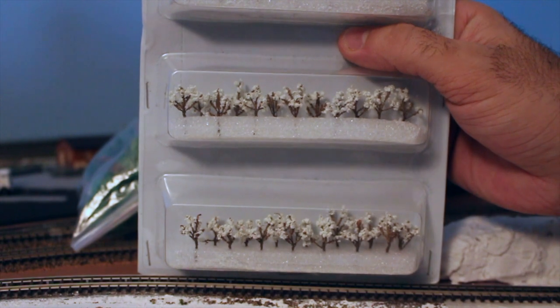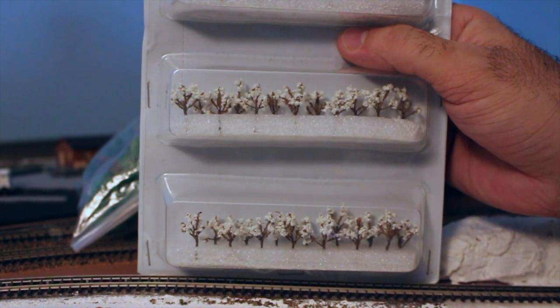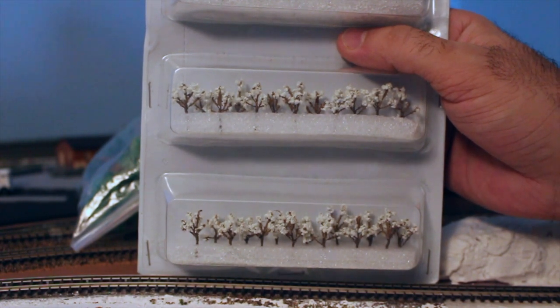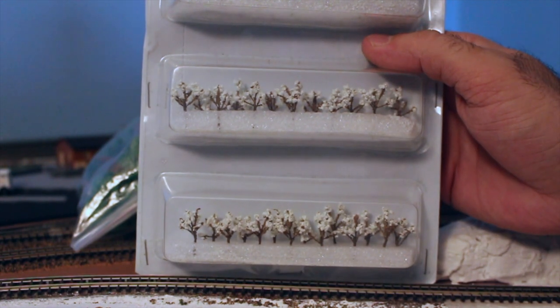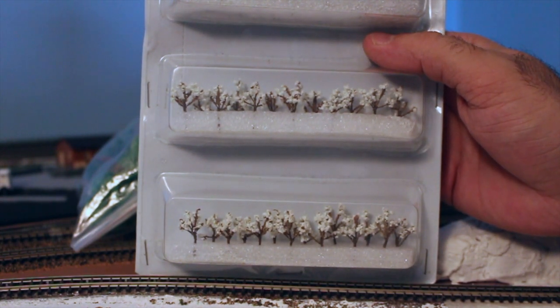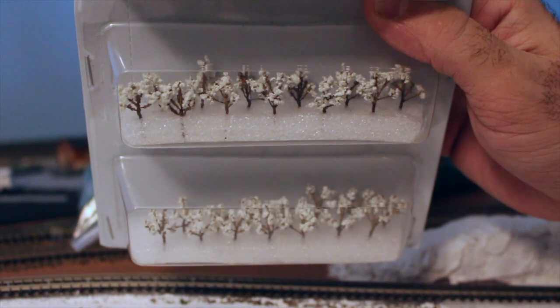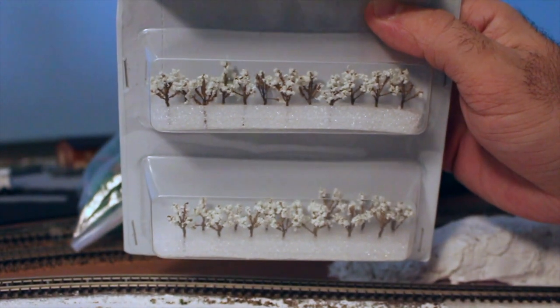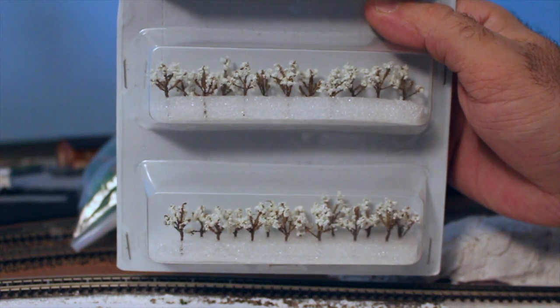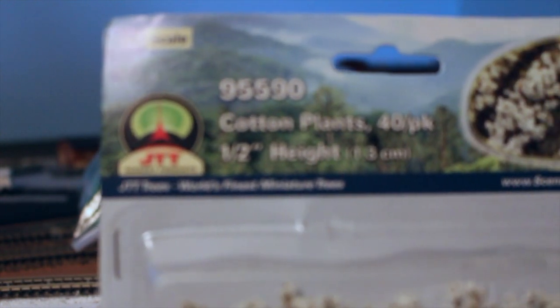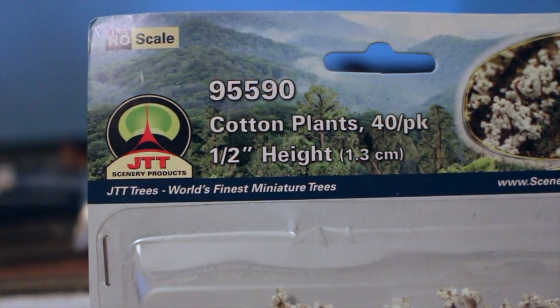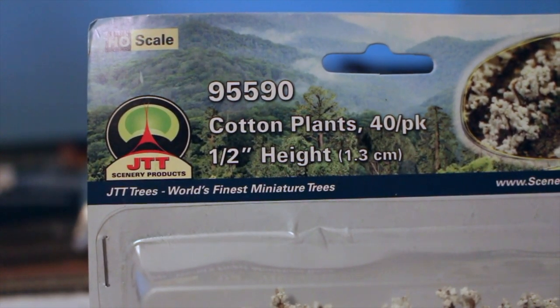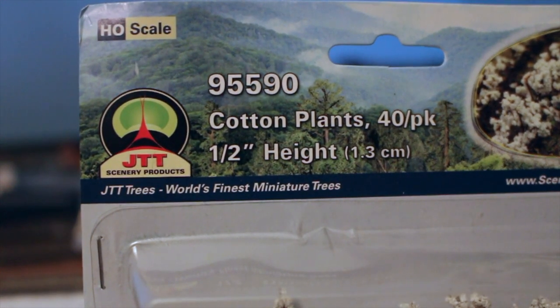This one here is actually HO scale, but I can still use it. This is supposed to be cotton plants but they actually look like flower trees. I'm going to be using this one. So this is a good example of where you can use HO scale products for N scale. I'll just show you the part number. Cotton plants, 40 in a pack, HO scale.